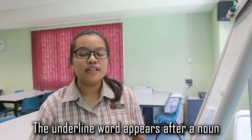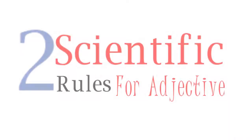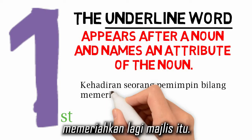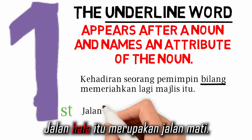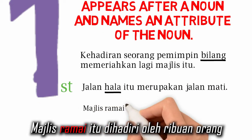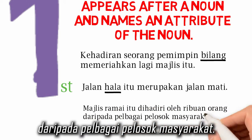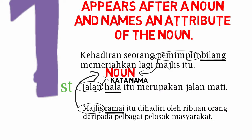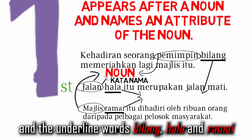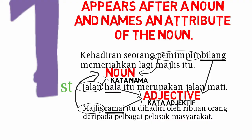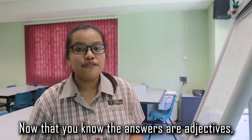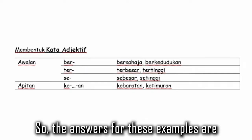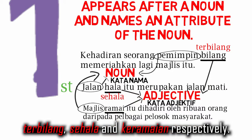The first rule for adjectives: the underlined word appears after a noun and names an attribute of the noun. For example, 'Kehadiran seorang pemimpin bilang memeriahkan lagi majlis itu,' 'Jalan hala itu merupakan jalan mati,' and 'Majlis ramai itu dihadiri oleh ribuan orang daripada pelbagai pelosok masyarakat.' Pemimpin, jalan, and majlis are nouns, and the underlined words bilang, hala, and ramai have to be turned into adjectives to name the attributes of these nouns. This is the list of impohan for adjectives. So the answers for these examples are terbilang, sehala, and keramaian respectively.